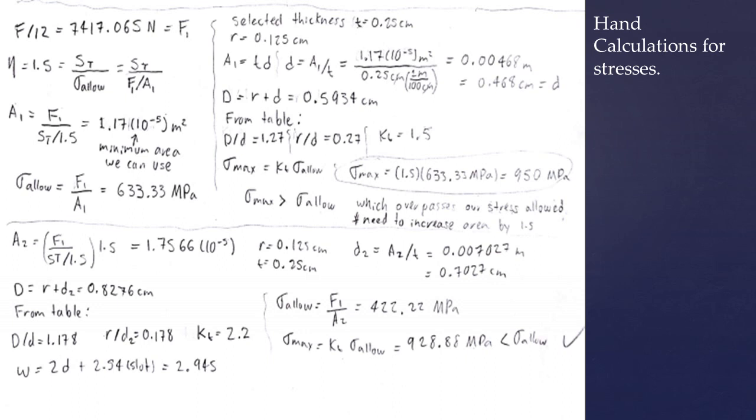Our capital D gave us a value of 0.5934 centimeters. And as we recall from the many charts in the textbook, many of the charts to find the stress concentration factors require values of the thickness, capital D, and little d.